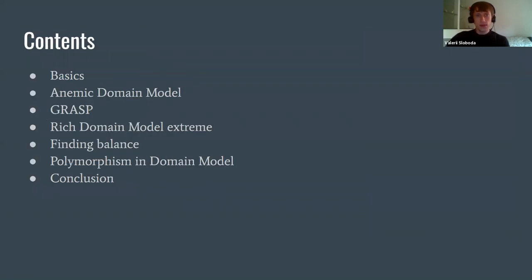Here is a brief outline of this presentation. I'm going to start with the basics, then explain the anemic domain model problem. Then we'll cover several most relevant GRASP patterns, look at the rich domain model extreme, and try to find some balance between domain models. Finally, I'll show the use of polymorphism in Spring, and the last part is the conclusion, where we'll compare the main models and decide whether the anemic model is evil and when to use it.